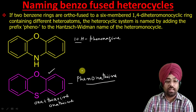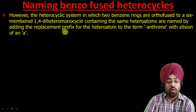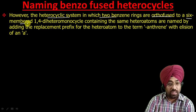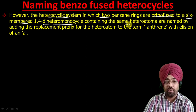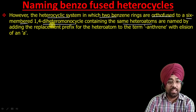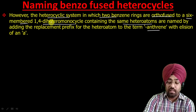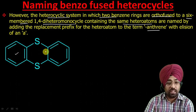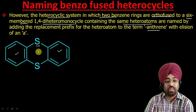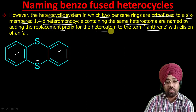Now there is another special case: a heterocyclic system in which two benzene rings are ortho-fused to a six-membered 1,4-dihetero monocyclic ring — similar to the previous case — but now both hetero atoms are the same. When the two hetero atoms are identical, we use the prefix 'anthrine.' In this case, the compound contains two sulfur atoms, so we use the replacement prefix for sulfur, which is 'thia.'